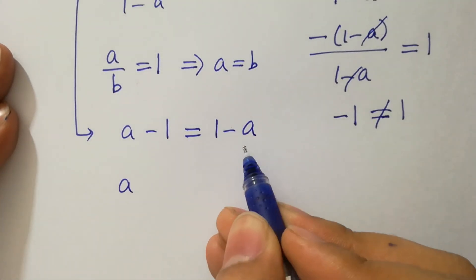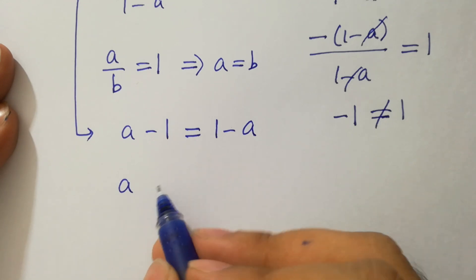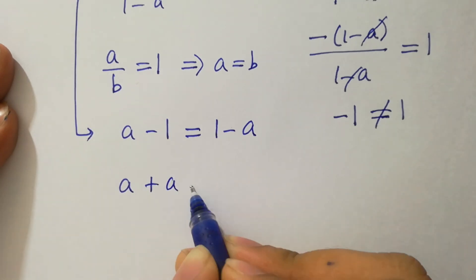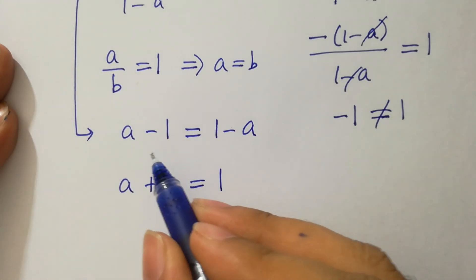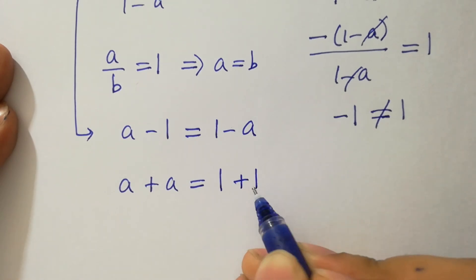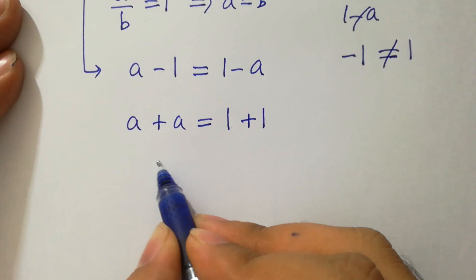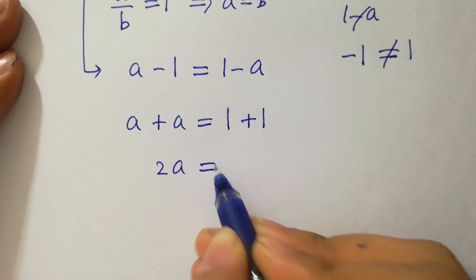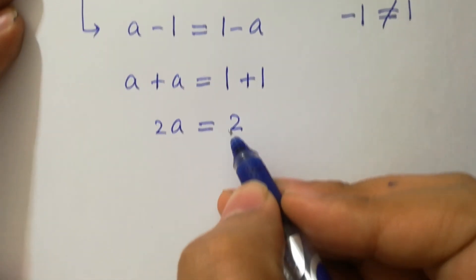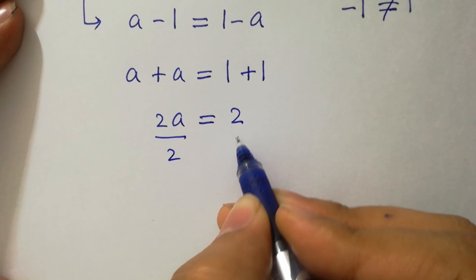Moving -a from left to right gives a+a, and moving -1 from right to left gives 1+1. We have 2a = 2. Divide by 2 on both sides.